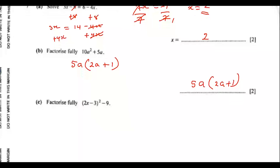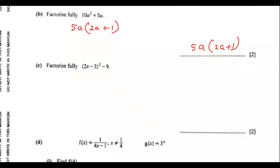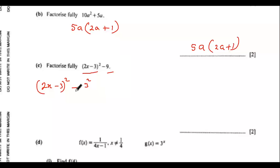Factorize fully: 2x minus 3, squared, minus 9. This is a squared expression, and we can write 9 in the form of a square so that we have a difference of two squares. So I have 2x minus 3, squared, minus 3 squared. Remember that when you have a squared minus b squared, the result is a minus b into a plus b. So I have a difference of two squares and can write this in that form.